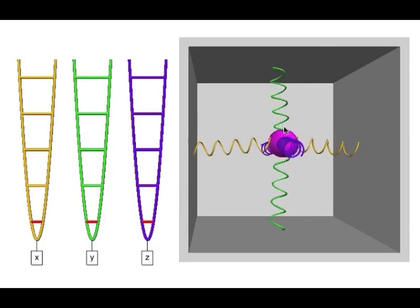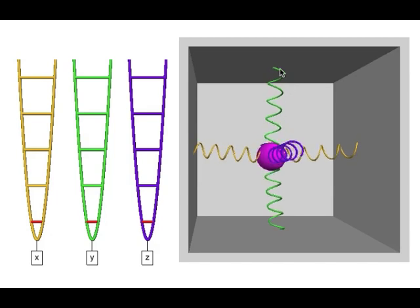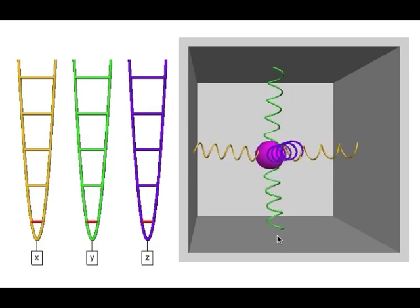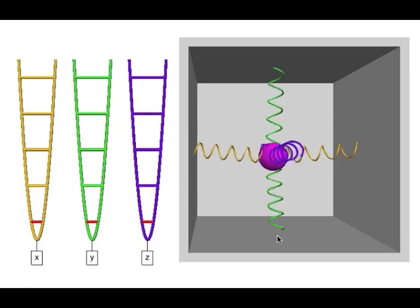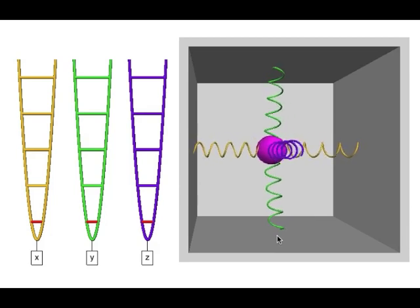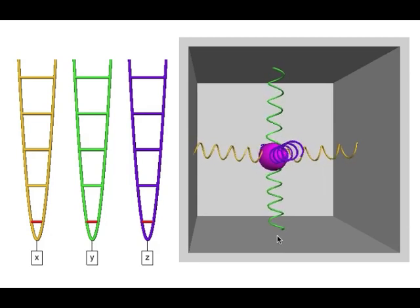Here we have a three-dimensional model of an atom stuck inside a cube where springs are connected to the walls of the box. This is obviously not quite right because the atom is really embedded in a crystal that goes on in all directions with neighboring atoms next door and so on. But for the purposes of our work today, we're going to use this as a simple model.